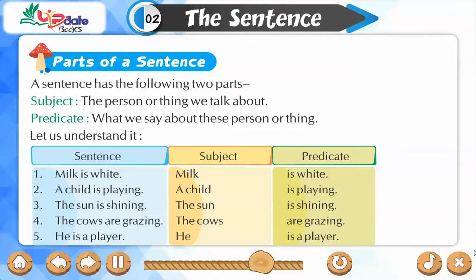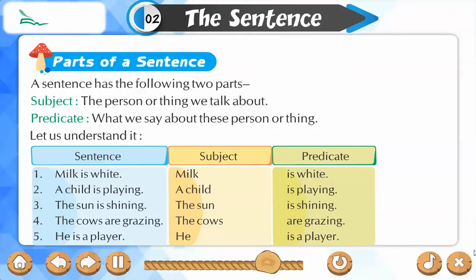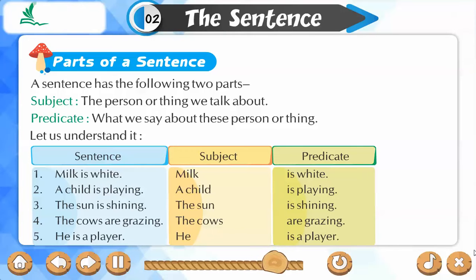Sentence — Subject — Predicate. 1. Milk is white. Subject: Milk. Predicate: is white. 2. A child is playing. Subject: A child. Predicate: is playing.